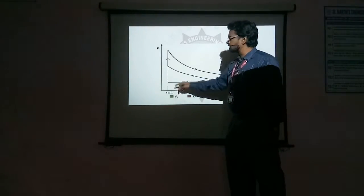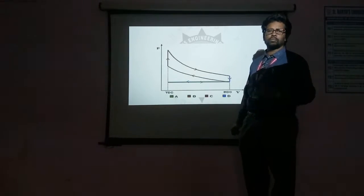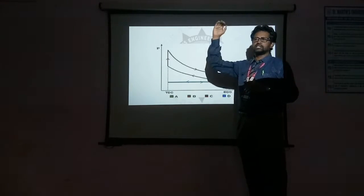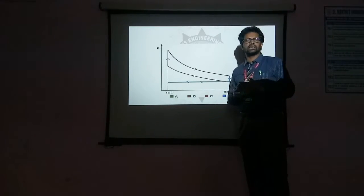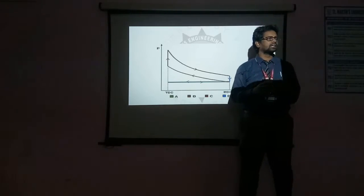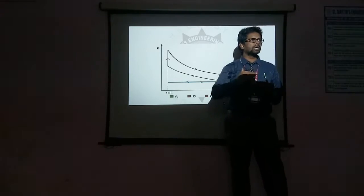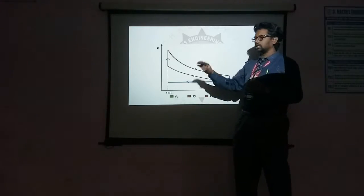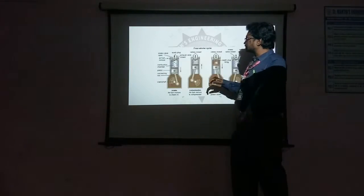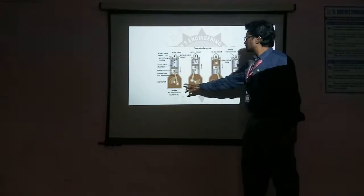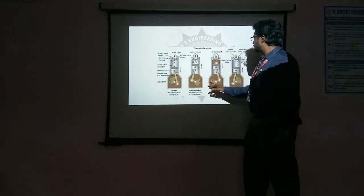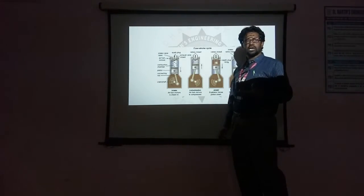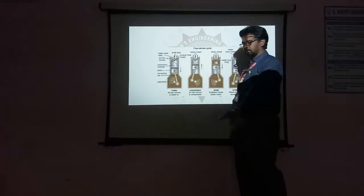This blue color represents the exhaust stroke. The piston will move from bottom dead center to top dead center, and whatever exhaust gases are inside the cylinder will be pushed out. So with respect to this PV diagram and these four strokes — suction, compression, power, and exhaust stroke — we will now draw the valve timing diagram.